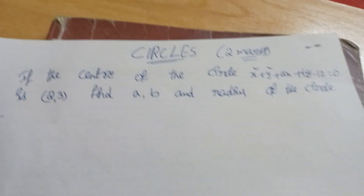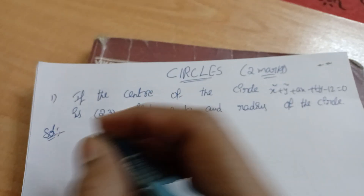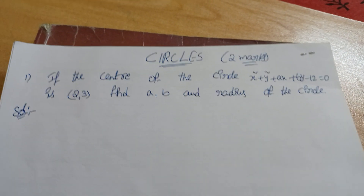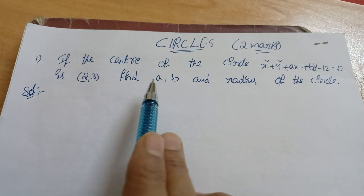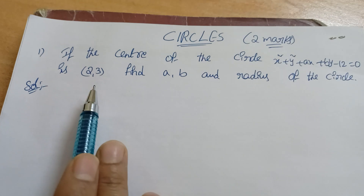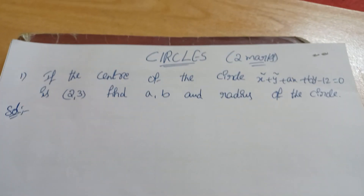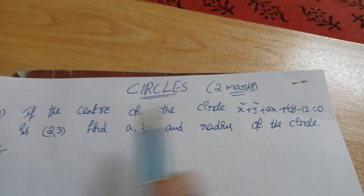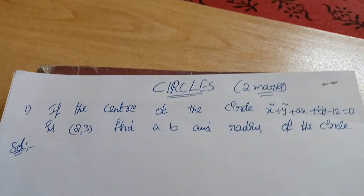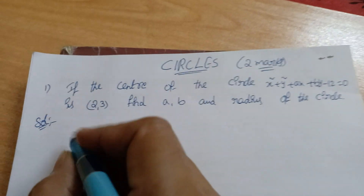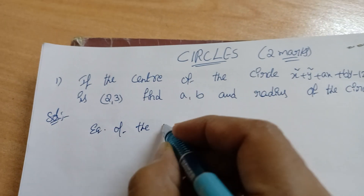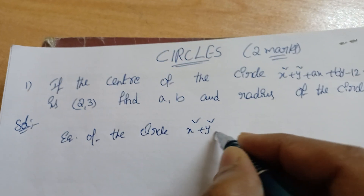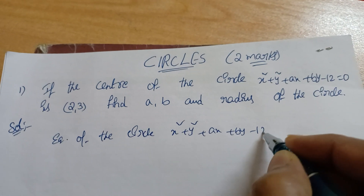Do you know the general equation of a circle? Let's discuss. The question is: if the equation of the circle is x² + y² + ax + by − 12 = 0 and the center is (2, 3), find a, b, and the radius. First, write down the given equation: x² + y² + ax + by − 12 = 0.